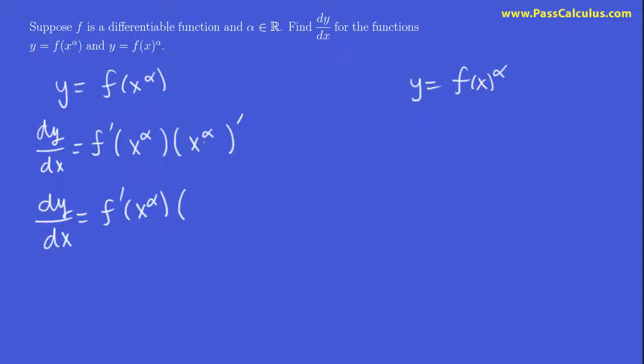Just because we're using a different letter other than n, it doesn't change anything. So the alpha comes to the front, x to the alpha minus 1. And that's all we're looking for there.